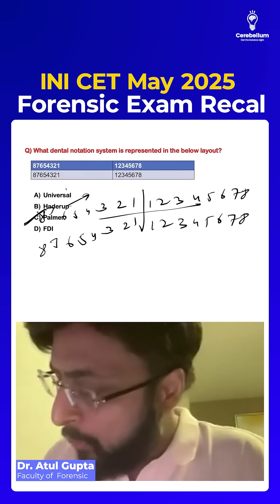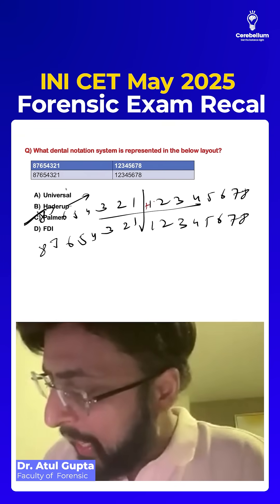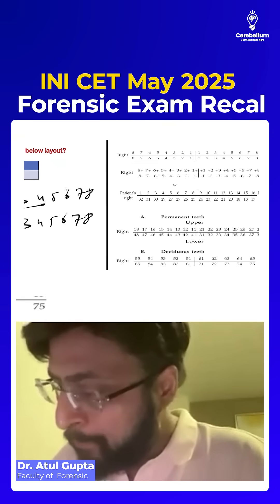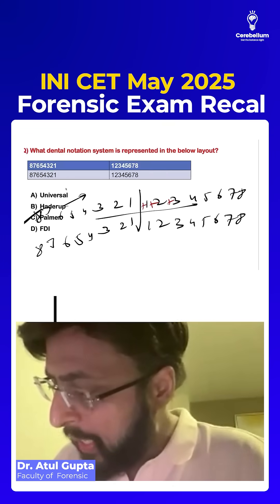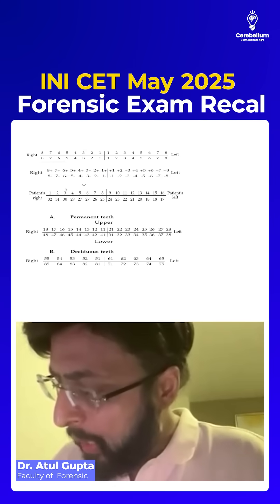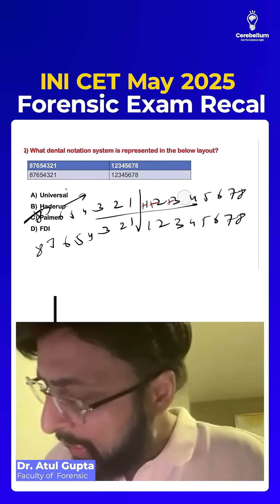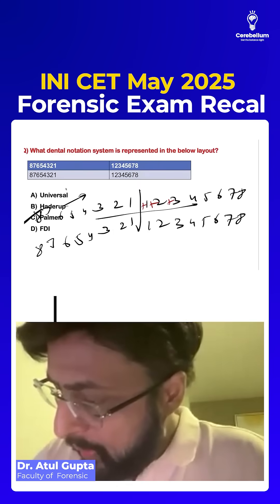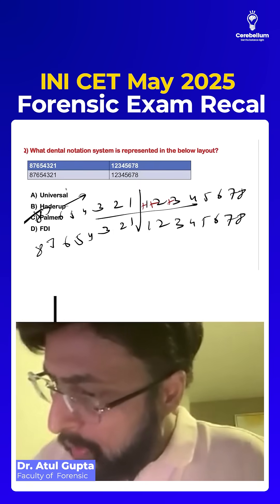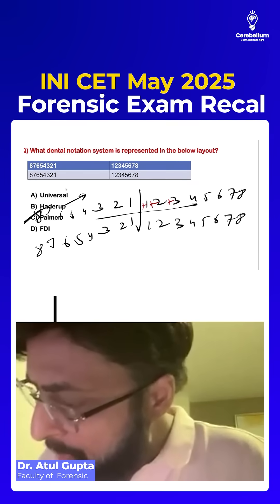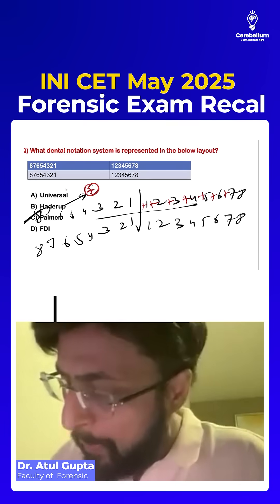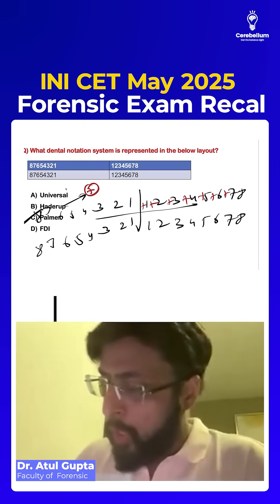Suppose you put a plus sign like this. If you put a plus sign, then it becomes Haderup. If you put a plus sign, it becomes Haderup.